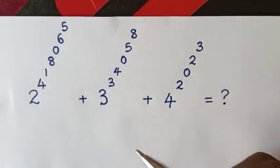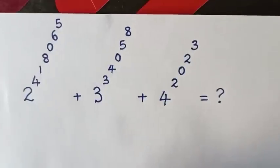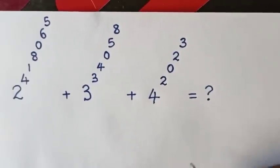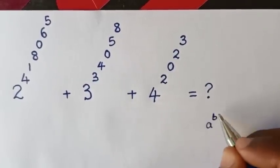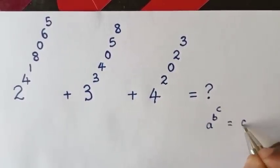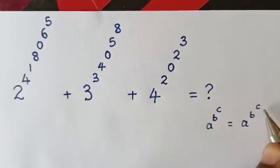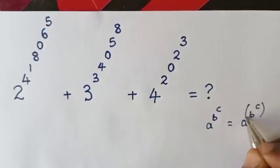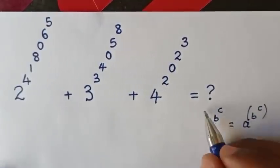We'll solve this from top to bottom by applying this rule: a power of b power of c is equal to a power of b power of c, then bracket at the top powers.